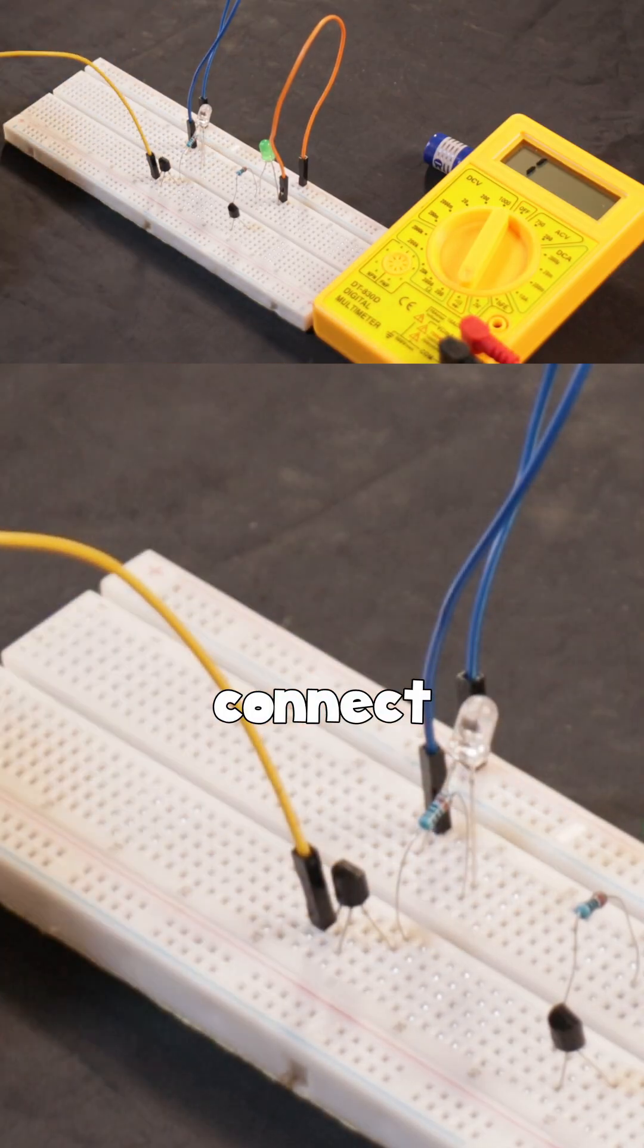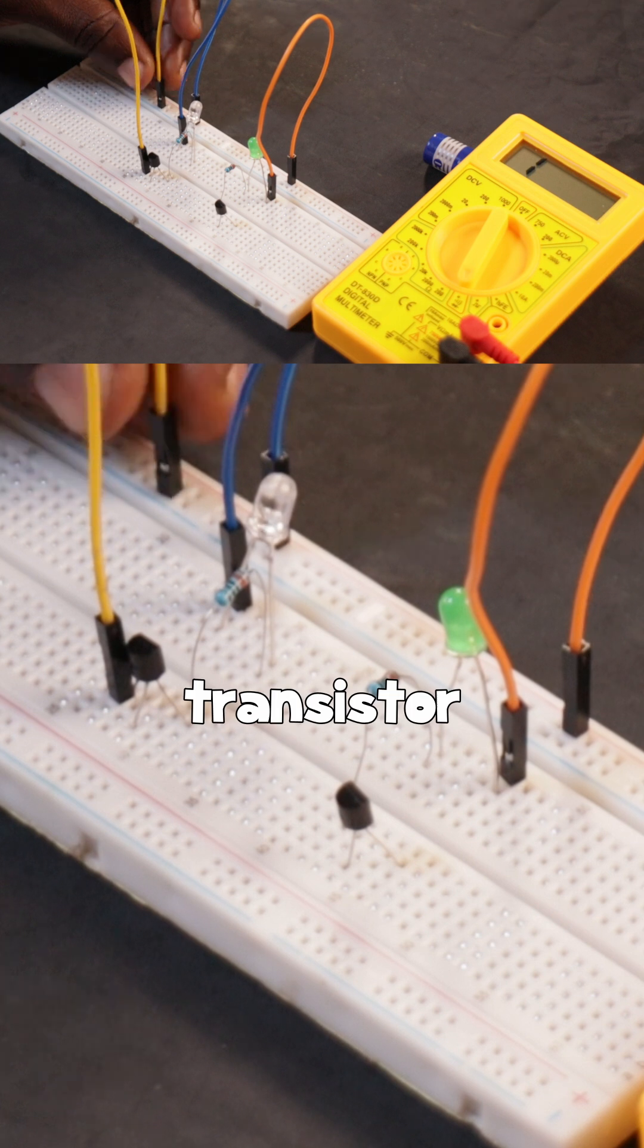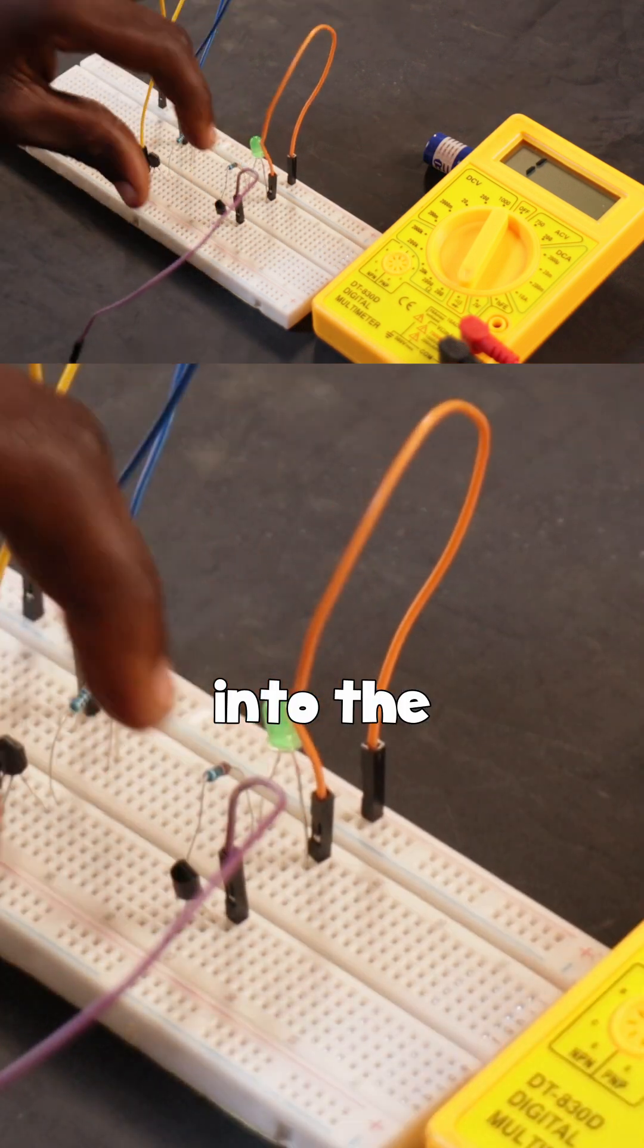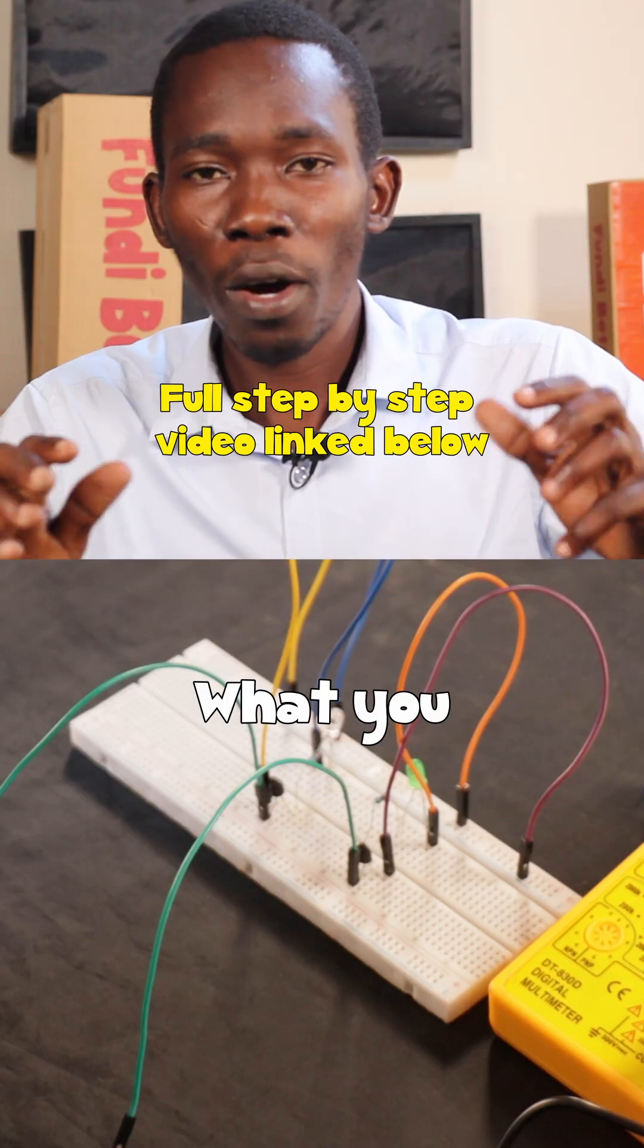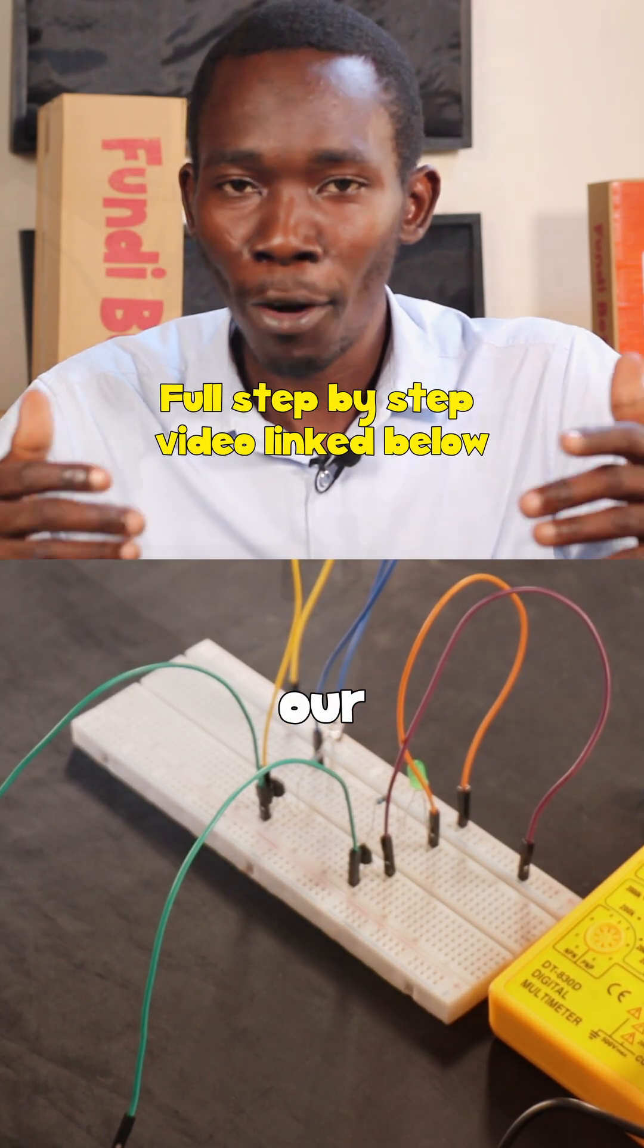Now we are going to connect the emitter terminal of the transistor to the negative terminal of our batteries. Next, we will power our breadboard.